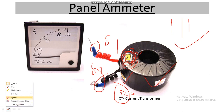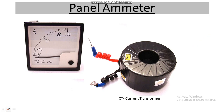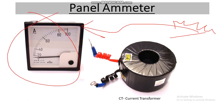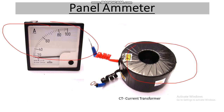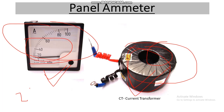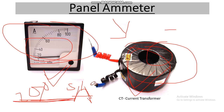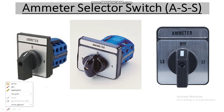During selection of ammeter and CT for panel installation, first we must calculate the load current — how much current that circuit will actually take. According to that we select the ammeter and CT ratings. We must ensure the ratio of the ammeter and CT match: for example, if we select an ammeter rated 200 by 5 ampere, the CT ratio must also be 200 by 5 ampere. We also need an ammeter selector switch, which lets us monitor the current of each phase.